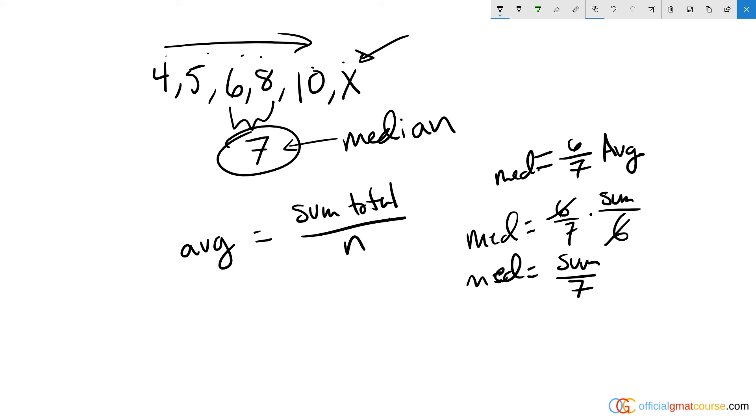The median is going to be the average of the middle two numbers, because whenever you have an even number of items in a set, you're going to have to average the middle two numbers to create the median. If it's an odd numbered set, there will be an odd man out in the middle. But in an even numbered set like six numbers, you're gonna have two in the middle and you're gonna have to average them, meaning add them together and divide by two to get the median, which is seven. So I know the median is seven.